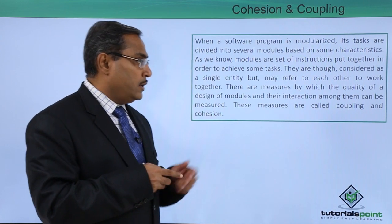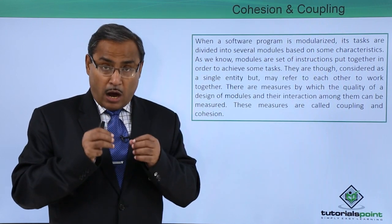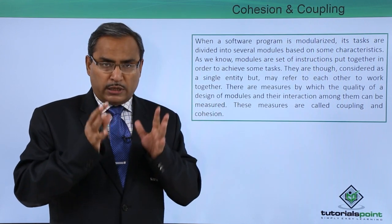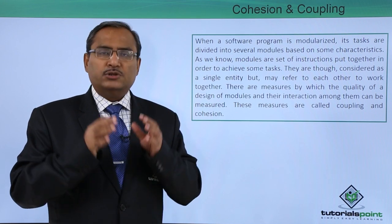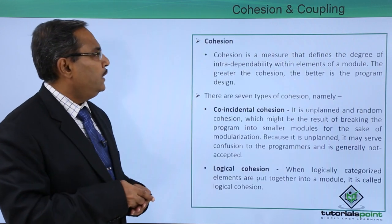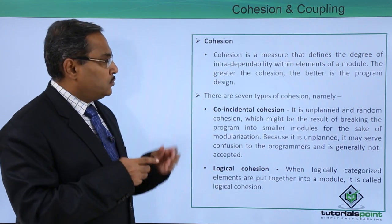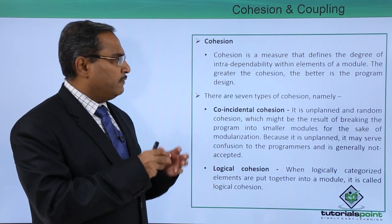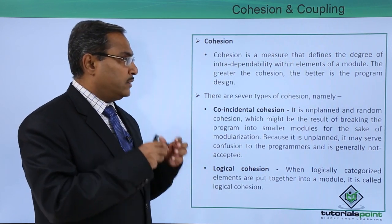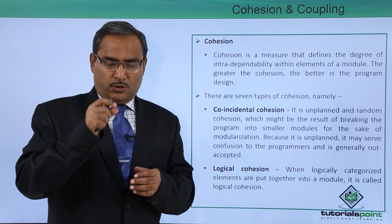These measures are called coupling and cohesion. Coupling measures how modules are interacting with each other, and cohesion measures how the statements and instructions within one module are correlated. Cohesion is a measure that defines the degree of interdependability within elements of a module. The greater the cohesion, the better the program design. There are seven types of cohesion.